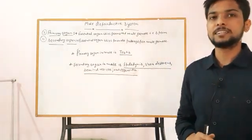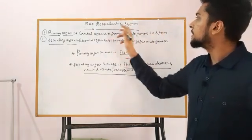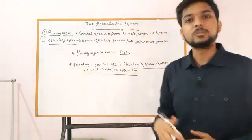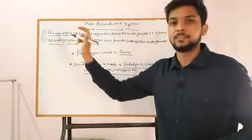Hello everyone, now we will talk about male reproductive system. In male reproductive system, there are two types of organs. First one is primary organ and next is secondary organ.